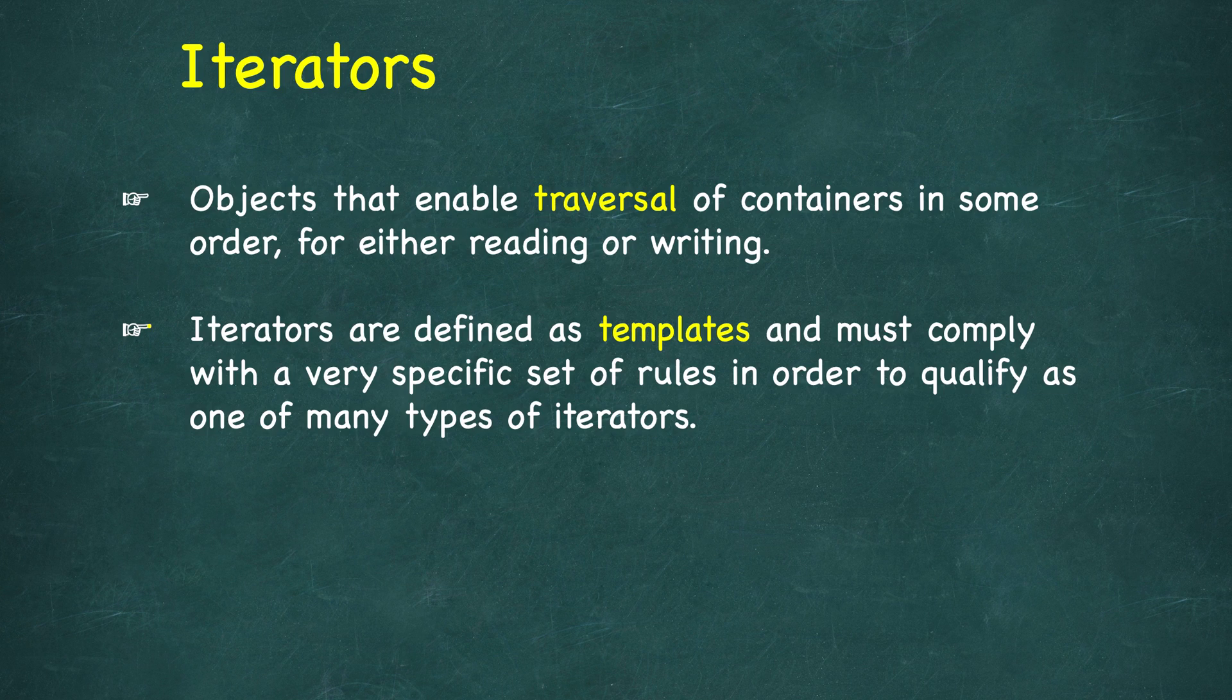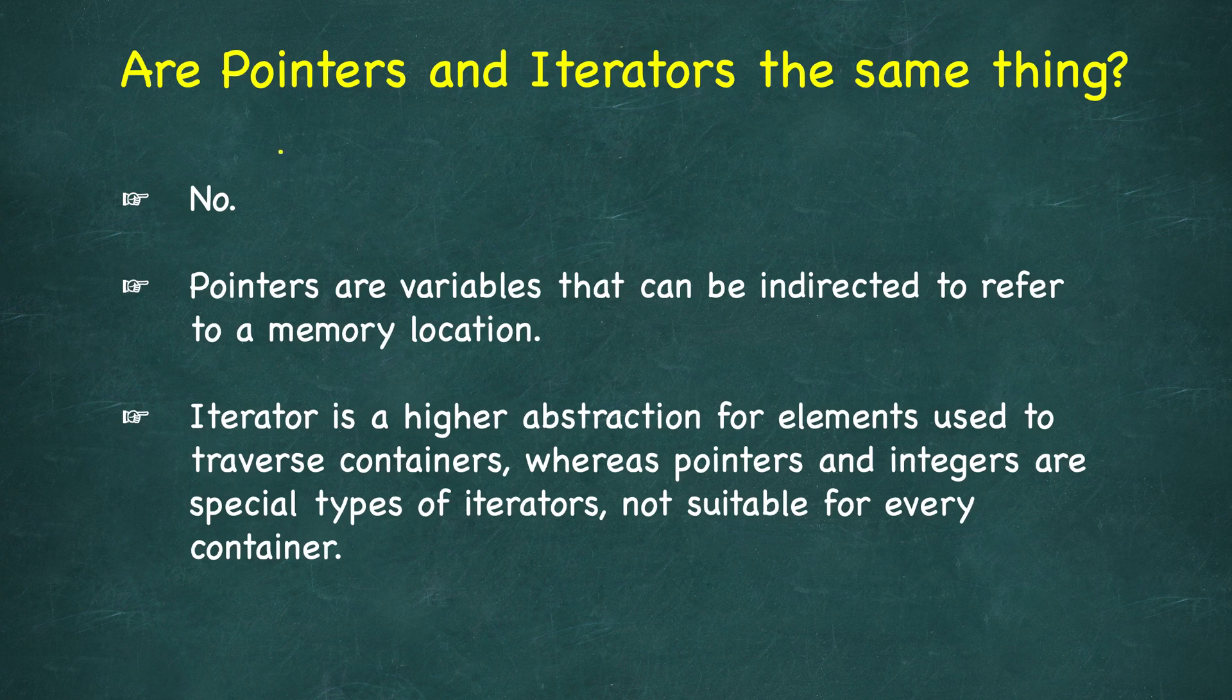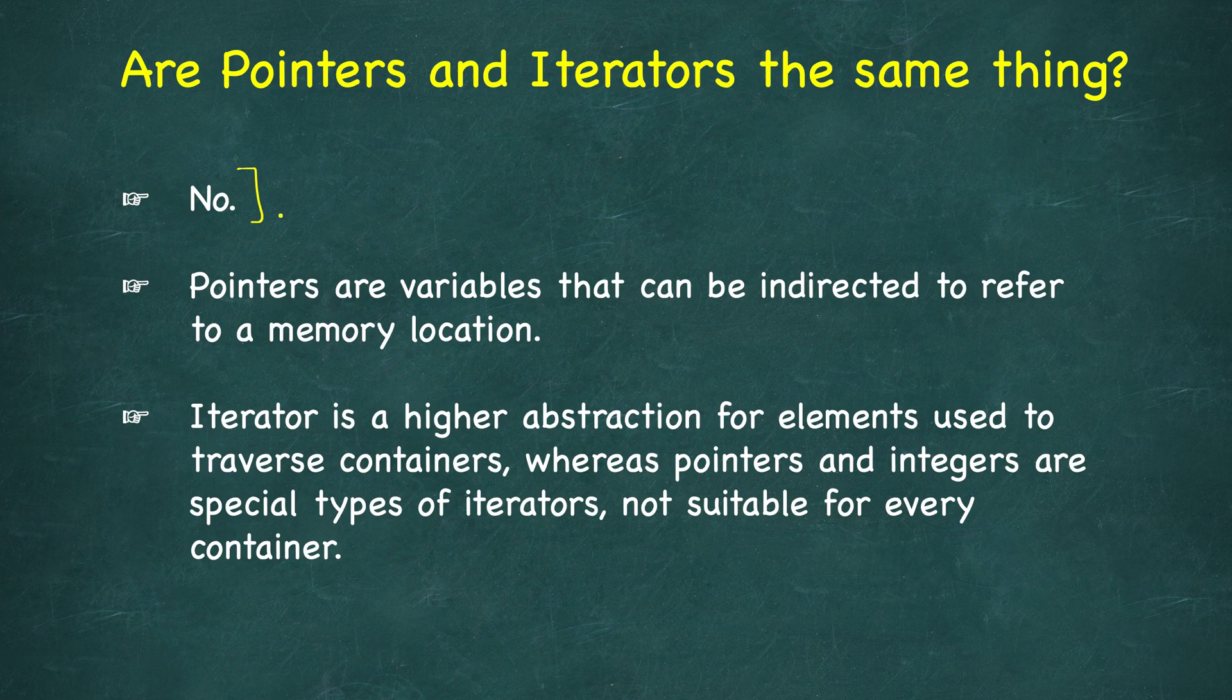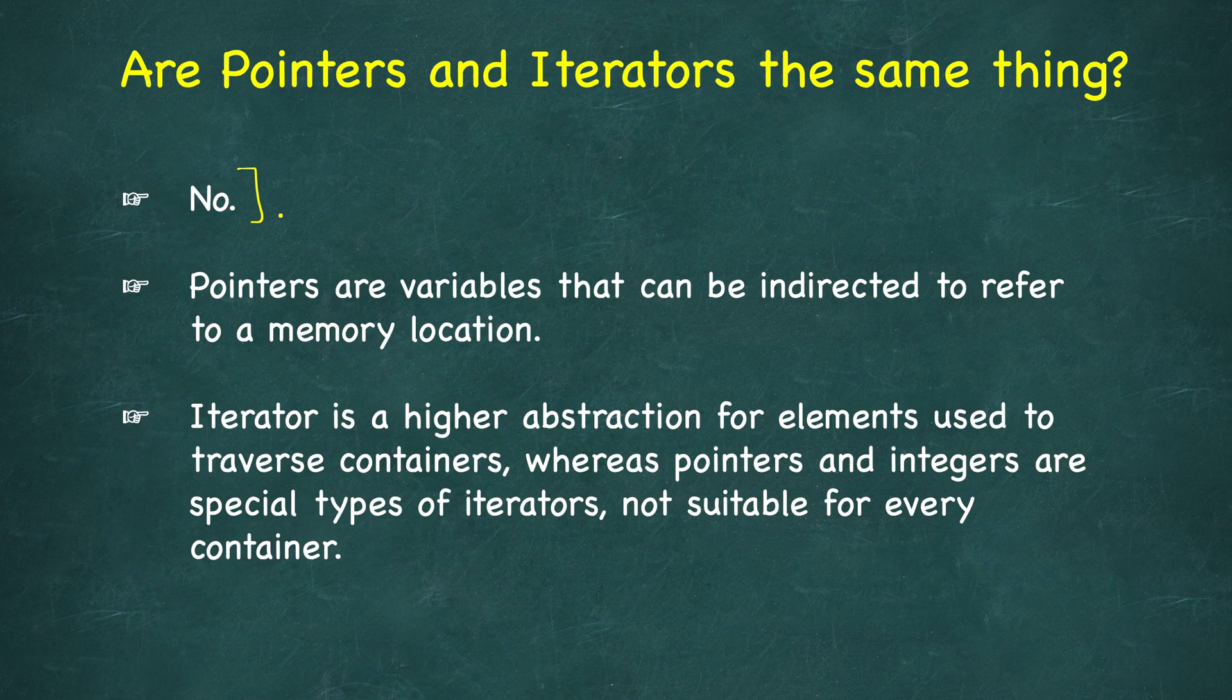One question that may naturally come to you is: are pointers and iterators the same thing? The short answer is no, but let's see why. There are some things common to them. Pointers are variables that can indirectly refer to some memory location. A pointer meets the requirements for many types of iterators, so we can say that pointers are one particular type of iterator.